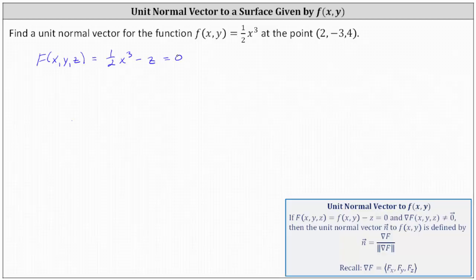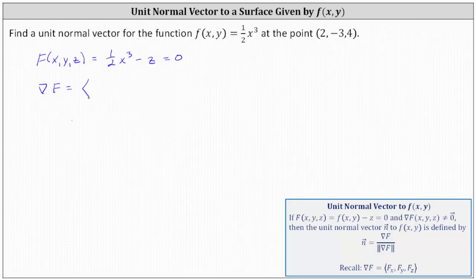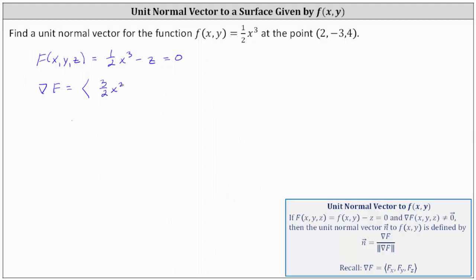Now we'll determine the gradient of F. The x-component is the partial of F with respect to x, so we differentiate ½x³ - z with respect to x, treating y and z as constants. The derivative of ½x³ with respect to x is (3/2)x², and the derivative of z with respect to x is zero since z is treated as a constant.